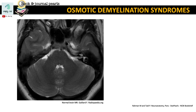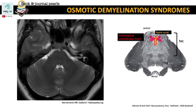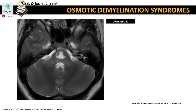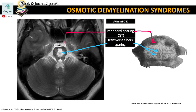The pons has two areas: the ventral and the dorsal. The ventral portion contains pontine nuclei, the corticospinal and corticobulbar tracts, and transversely crossing fibers. These transverse fibers arise from the pontine nuclei that project to the opposite cerebellum through the middle cerebellar peduncle. The classic appearance of pontine myelinolysis is a symmetric lesion in the middle of the pons. It spares the peripheral region, which includes the corticospinal tracts, and there is also sparing of the transverse pontine tracts.